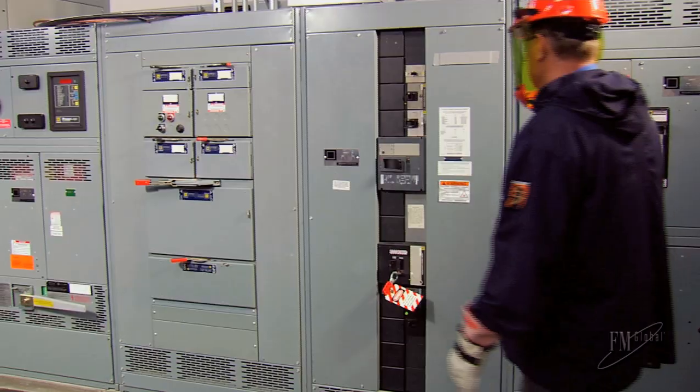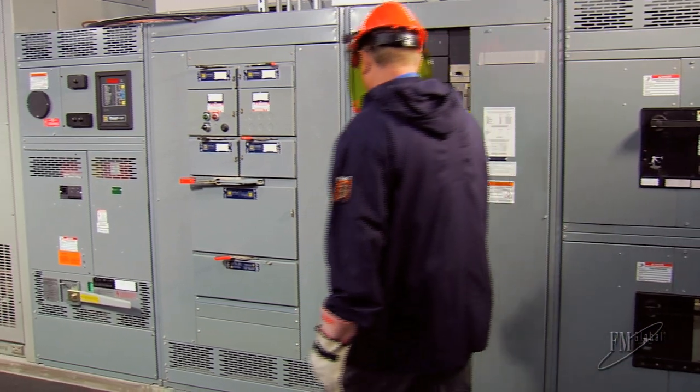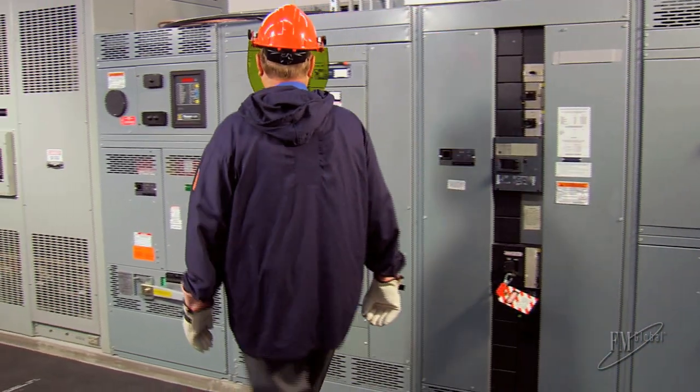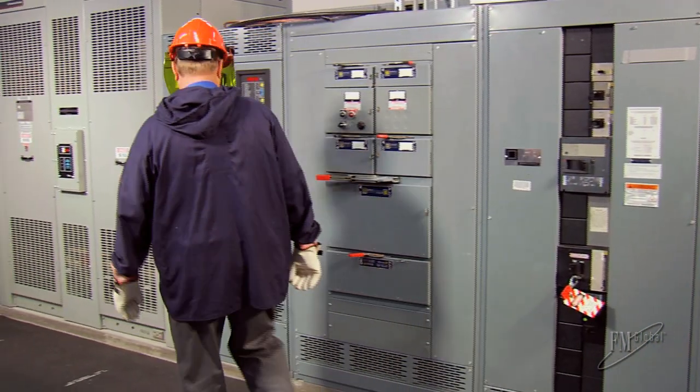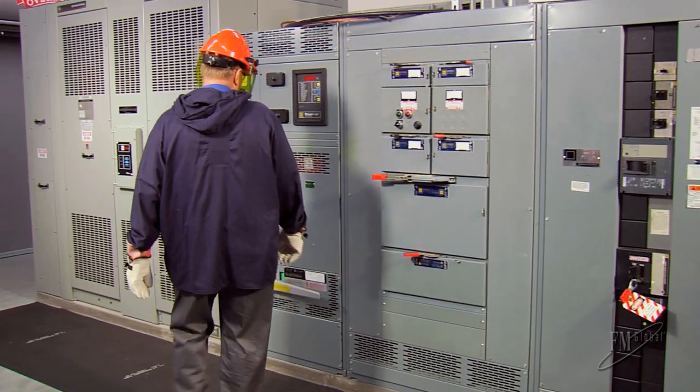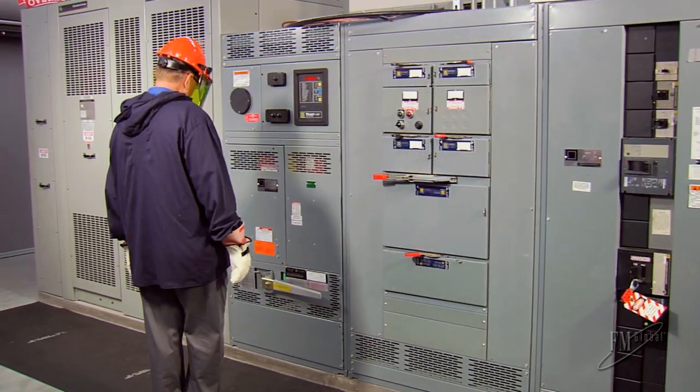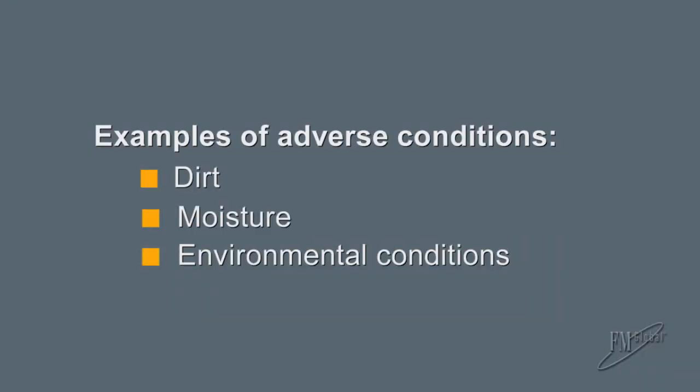Some adverse conditions can be identified through simple visual inspections, and FM Global recommends routine visual inspections as a matter of good engineering practice. Examples include dirt, moisture, and other environmental conditions.